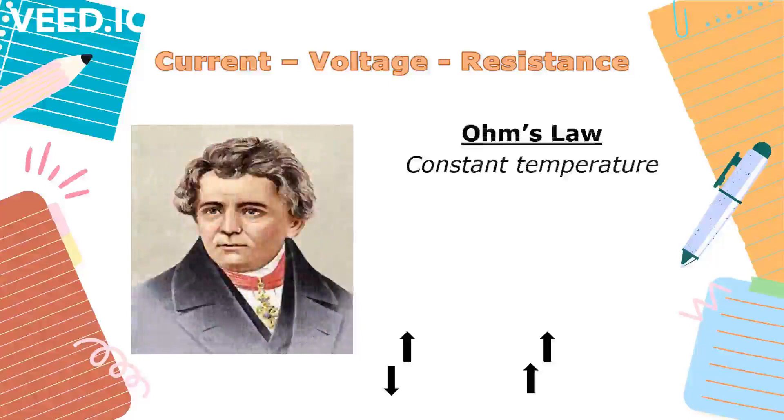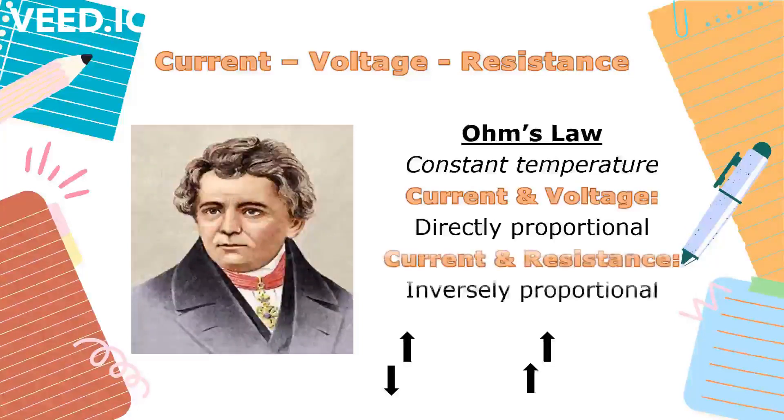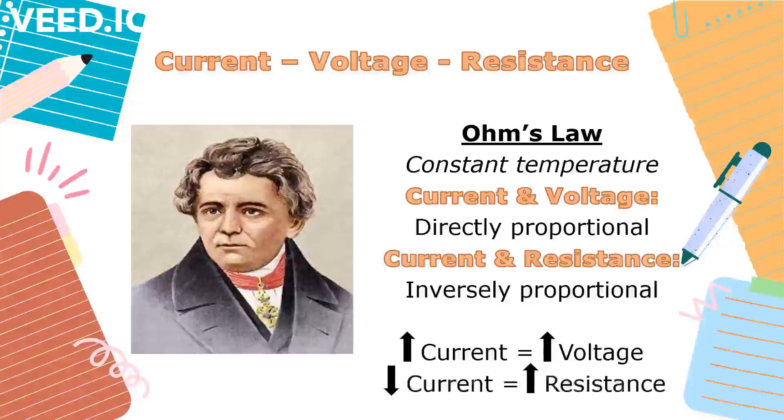current is directly proportional to the voltage but inversely proportional to resistance. This means that when the voltage is increased, the current will increase as long as the resistance doesn't change. If resistance is increased and the voltage remains the same, the current will decrease.